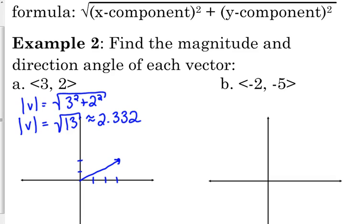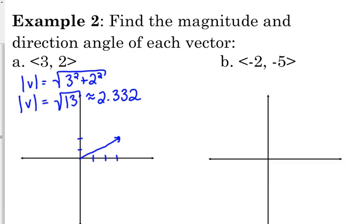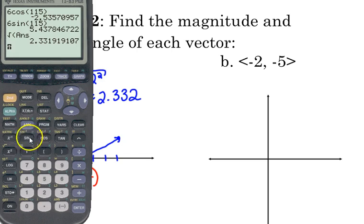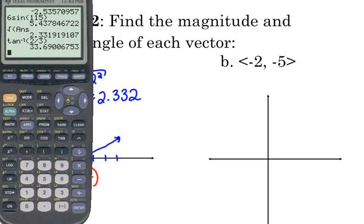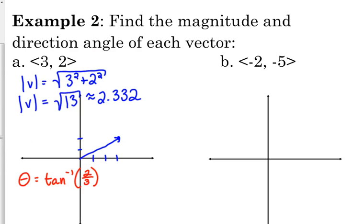Then, we need to find its direction angle. So, the direction angle is the inverse tangent. Theta is the inverse tangent of y over x sine over cosine. Inverse tangent of 2 over 3, which is about 33.69 degrees. Which, if you drew your picture fairly to scale, it agrees. Makes sense. Fairly shallow angle.